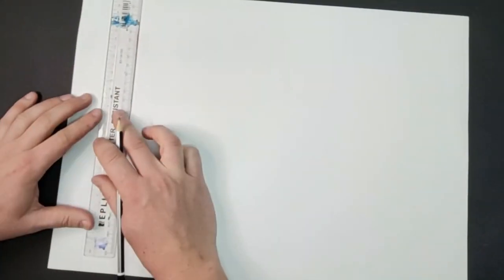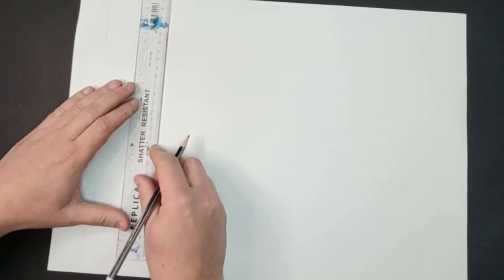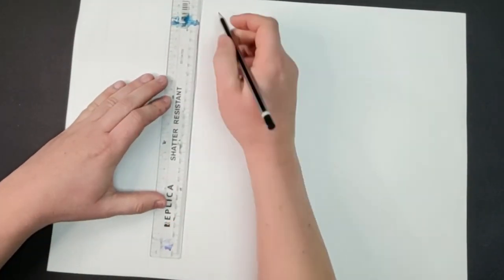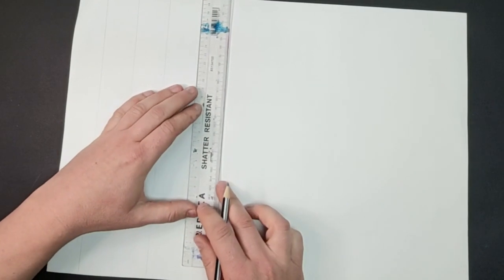To start your drawing, draw a grid by placing lines a ruler width apart vertically and horizontally on your page.